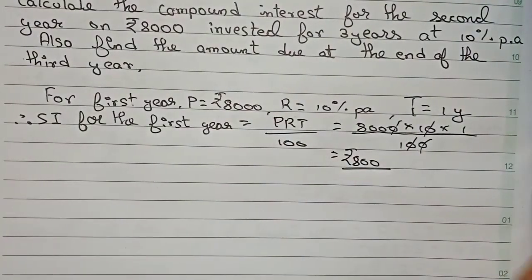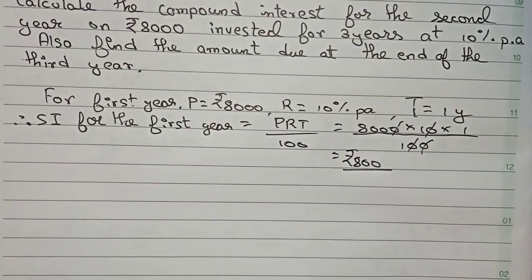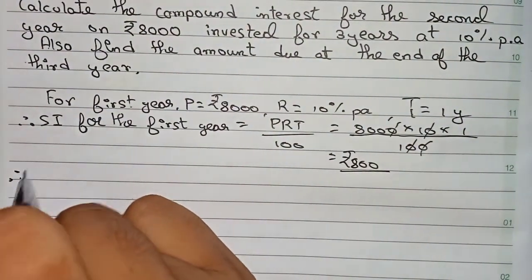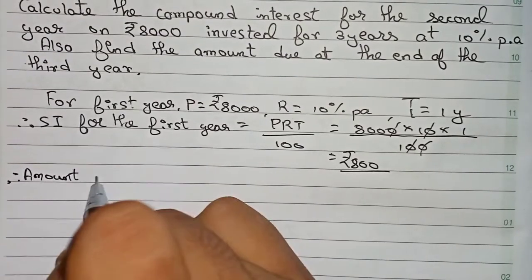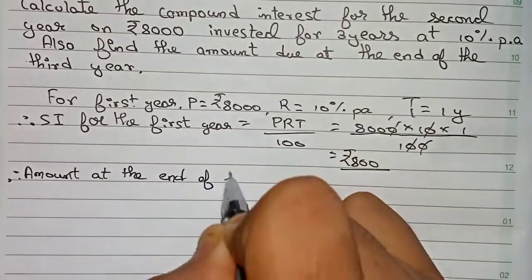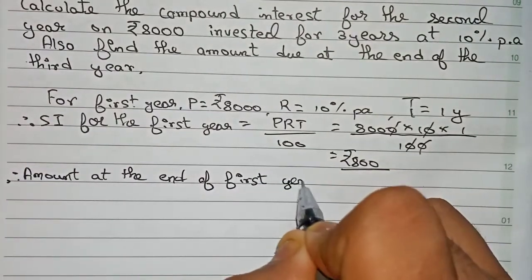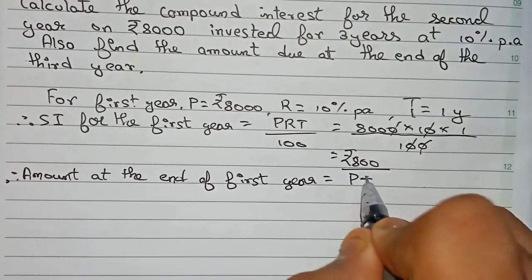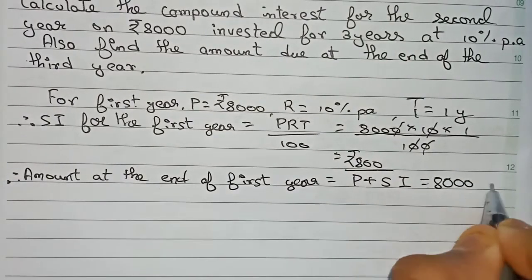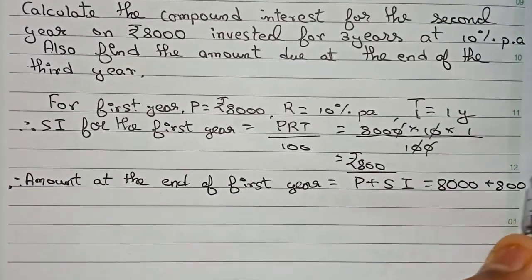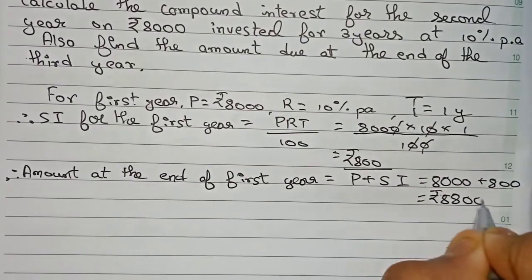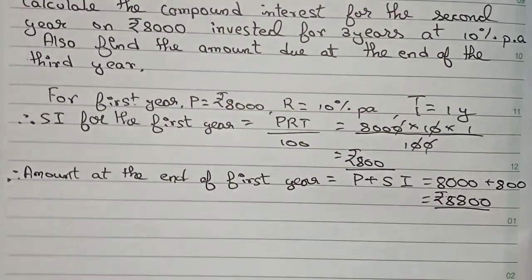Now I have to find the amount at the end of the first year. The amount formula is Principal + SI, so that is 8000 + 800, which equals rupees 8800. This is the amount at the end of the first year.